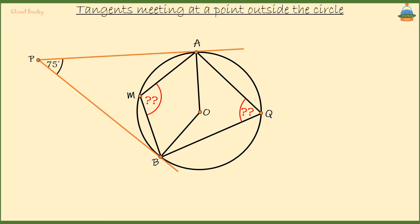We need to know the size of angle AOB first. Now, we know that APB plus AOB should be 180 degrees